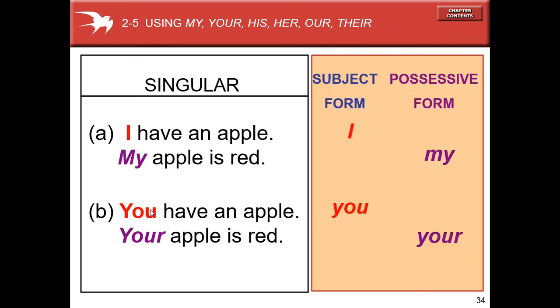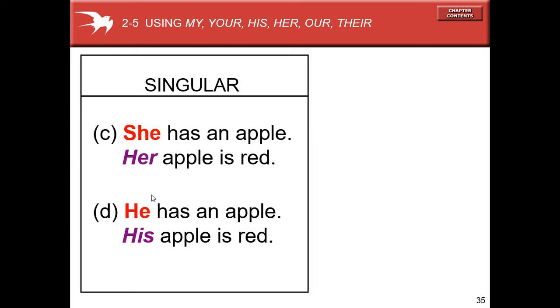So we have the personal pronoun I and the possessive adjective my, the personal pronoun you and the possessive adjective your. Now, she has an apple, her apple is red. Her is a possessive adjective. He has an apple, his apple is red. His is a possessive adjective.